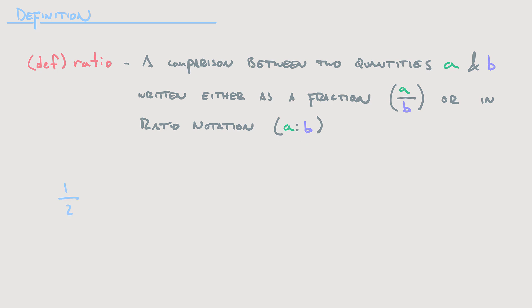For an example, let's say you have the ratio 1 over 2. You could write this as 1 over 2, or as 1 to 2. If you want a concrete example of a 1 to 2 ratio, let's say you have two girls for every one boy. So there's a ratio of boys to girls in a 1 to 2 ratio. Pictorially, we have one boy and two girls.